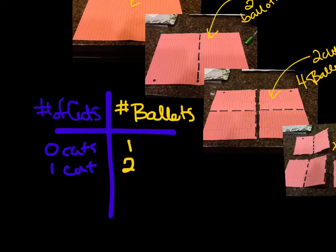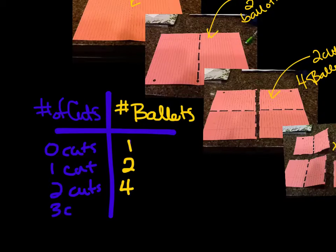If we had two cuts, we get four ballots. And for three cuts, I'm seeing eight ballots. So this is what's called an exponential function, and we're going to be looking at this throughout the rest of this investigation.